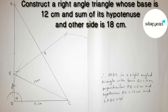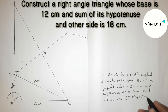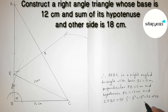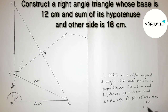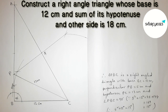We can verify this using the Pythagorean theorem: perpendicular squared plus base squared equals 5² + 12² = 25 + 144 = 169, and the square root of 169 is 13, which equals the hypotenuse. This satisfies the Pythagorean theorem, confirming that triangle PBC is a right angle triangle. That's all, thanks for watching.